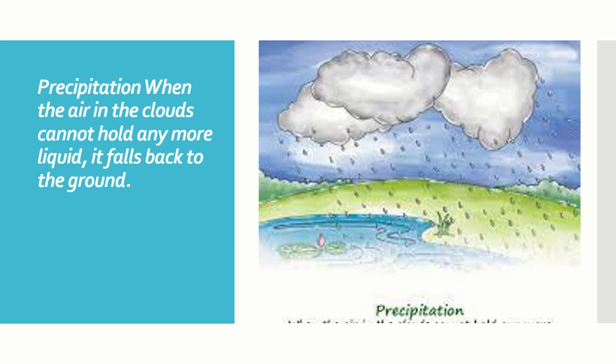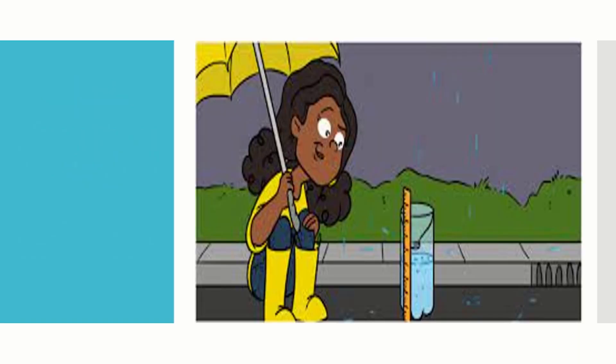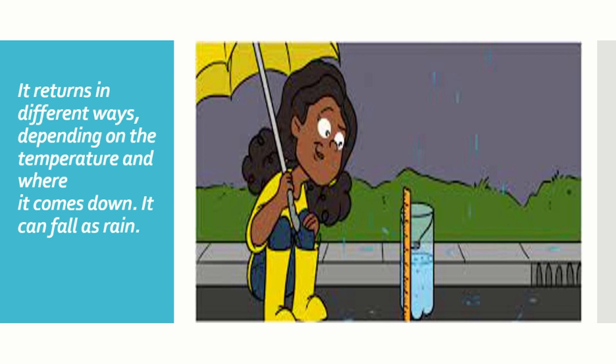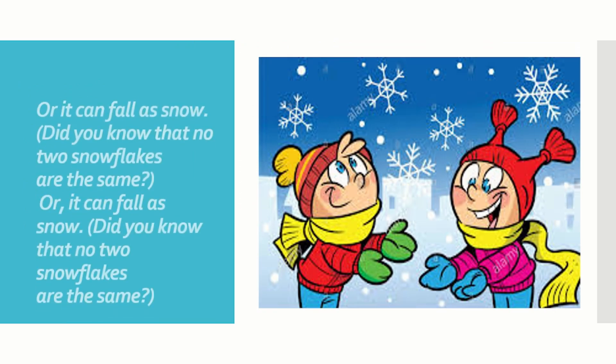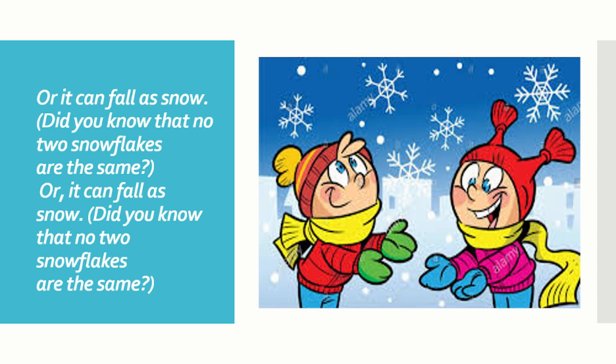Precipitation. When the air in the cloud cannot hold any more liquid, it falls back down. It returns in different ways depending on the temperature and where it comes down. It can fall as rain, or it can fall as snow. Did you know that no two snowflakes are the same?